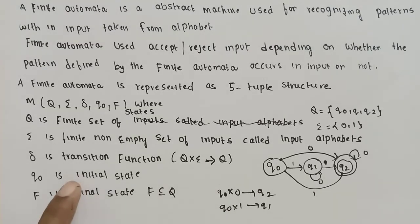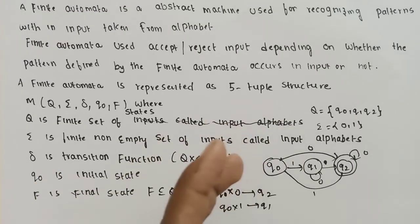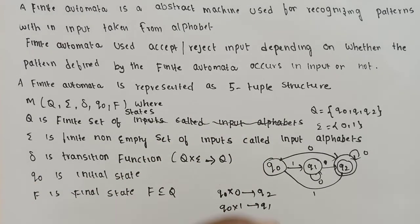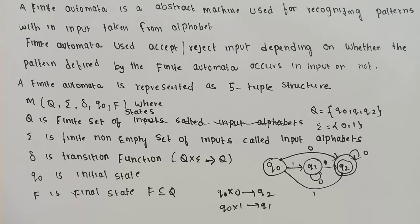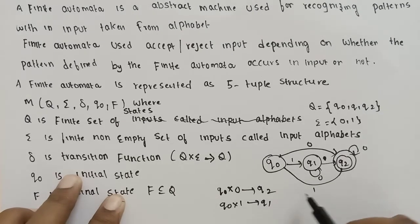Q0 is the initial state. The starting state is Q0, which is a subset of Q. In this example, the initial state Q0 is Q0.